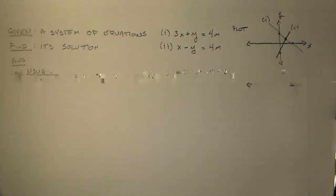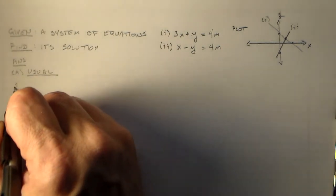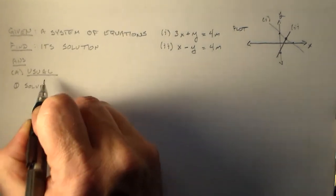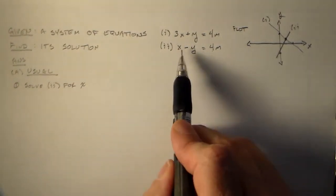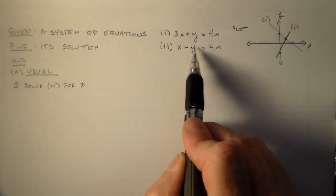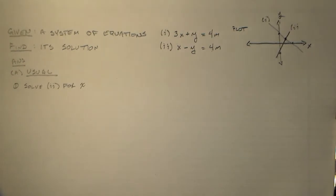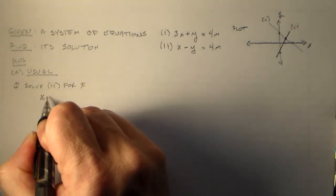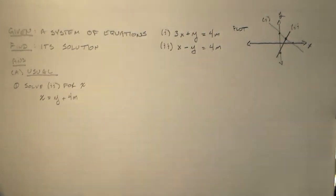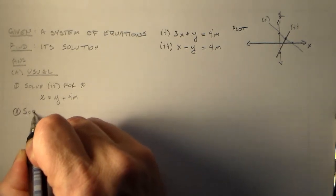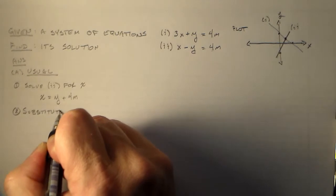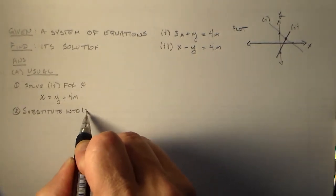My sort of feeling from working with students in the past is if you have a system of equations, what you usually want to do is you want to solve one of these equations. In this case, we'll try two for one of the variables, in this case x. So we just say x is equal to y plus 4 meters, and then we substitute that into the other equation.